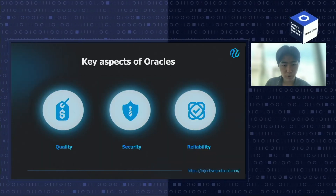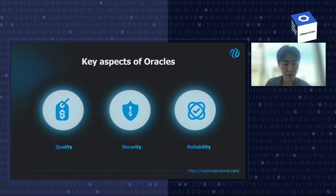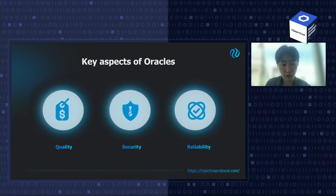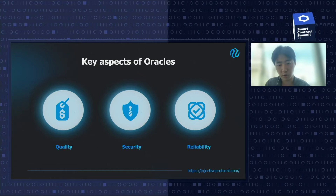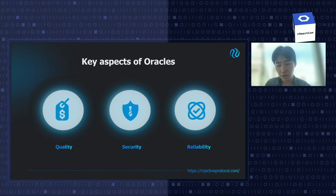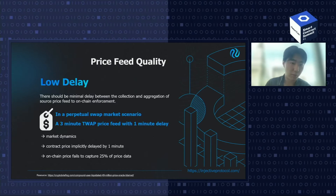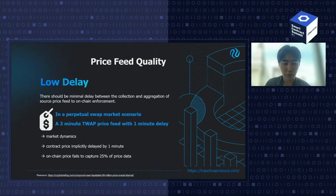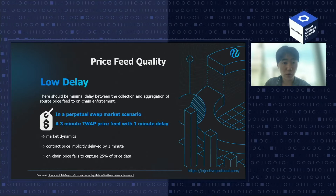BitMEX's case is actually very interesting because it was a centralized oracle on a centralized exchange, but due to the selection of the source price it created a lot of issues that were unanticipated by traditional traders. When we evaluate oracles, we generally look at three factors: number one is the quality of price feed, number two is the security of the oracle, and number three is the reliability of it. In terms of quality of price feed, it's extremely important for any type of derivative market.